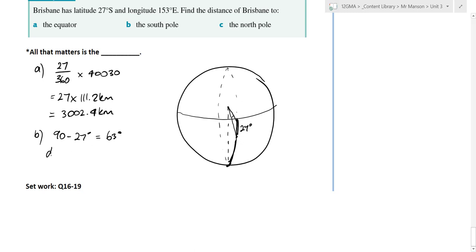So therefore the distance is equal to, not 27, I'm just copying now, which is bad. 63 times 111.2. And if somebody can do that calculation for me. 7,005.